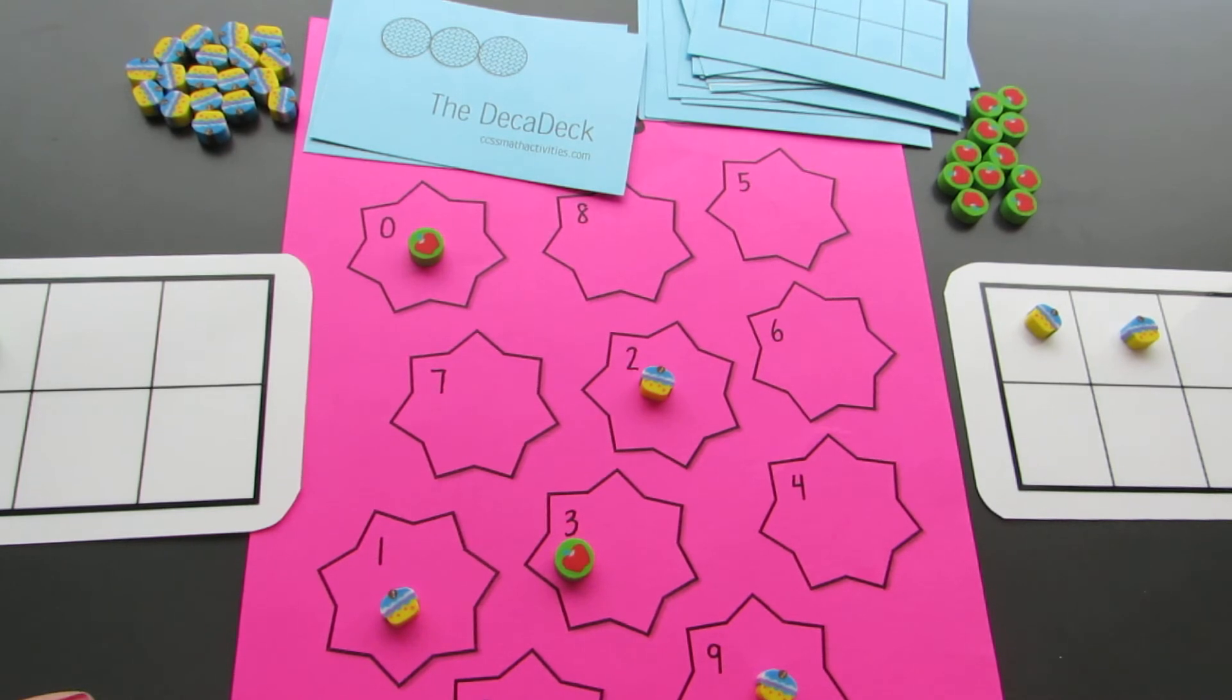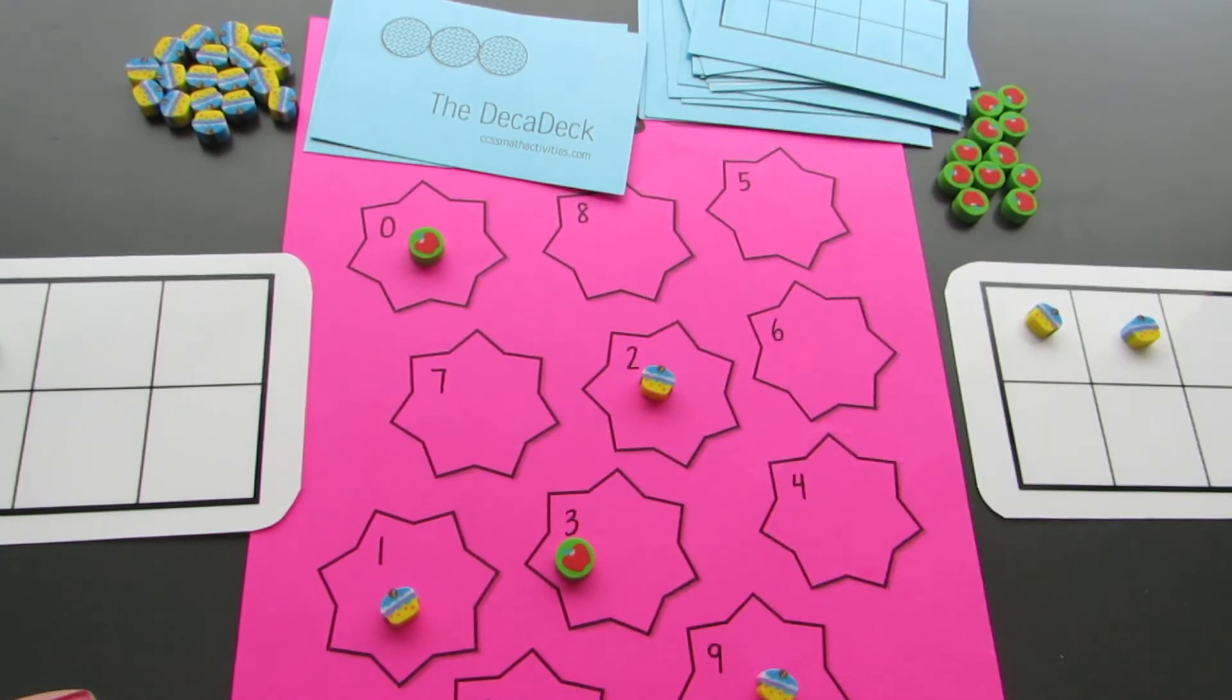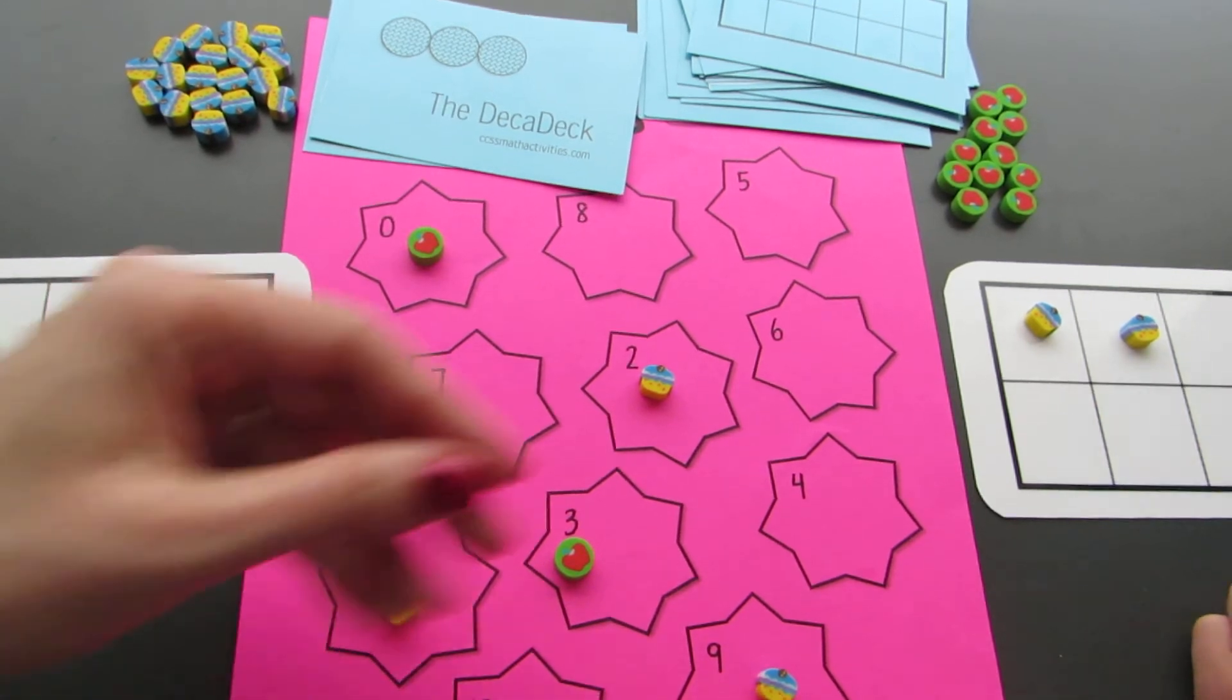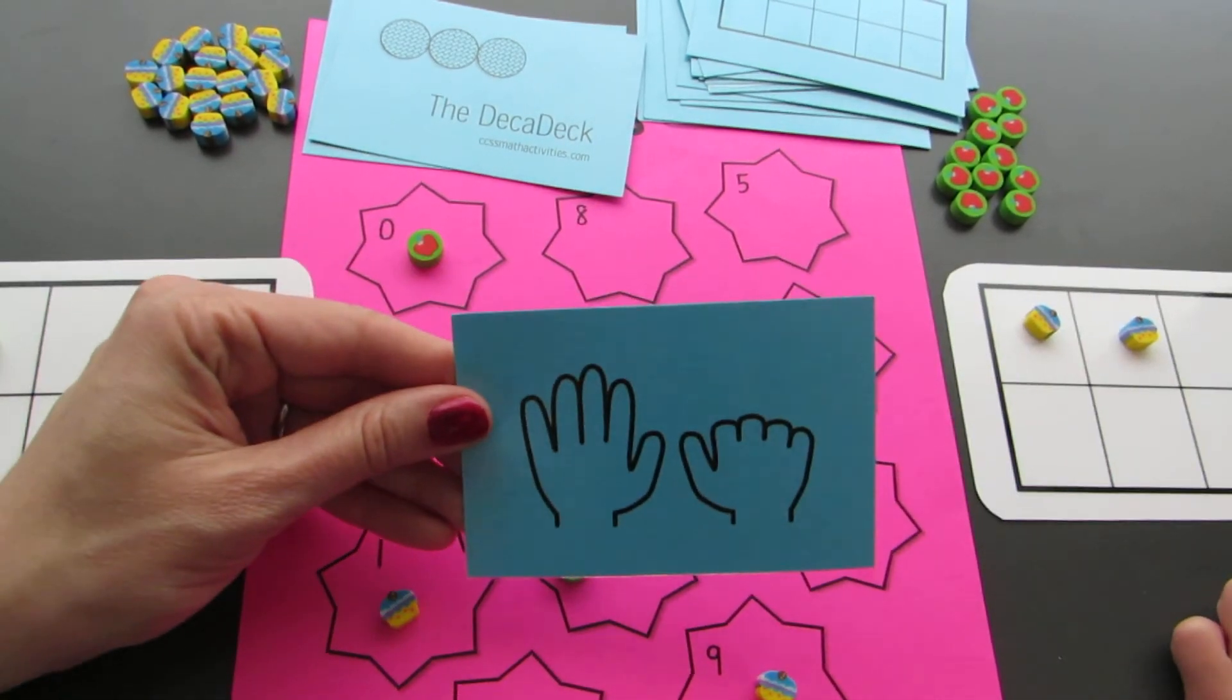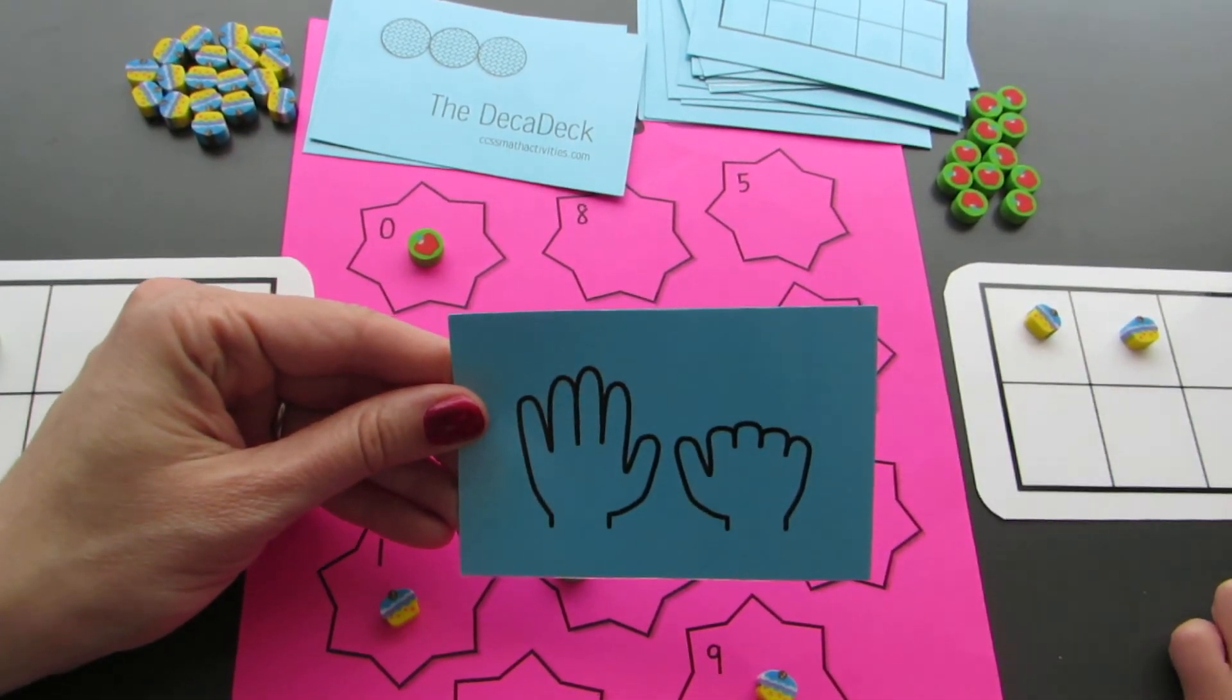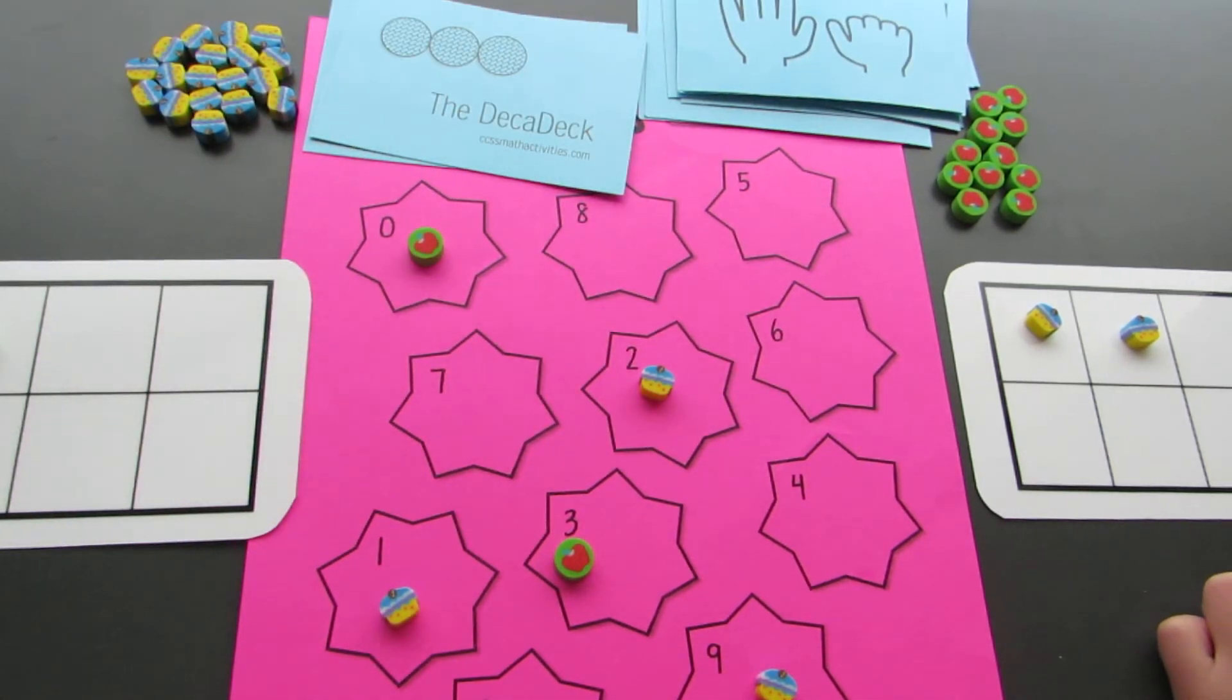What card did you get, James? Seven. Seven. Are you sure? Are you sure? Yep. Let's look at it together. Six. Five plus one more is six. Okay, six. Put yours on six. I'm going my turn.